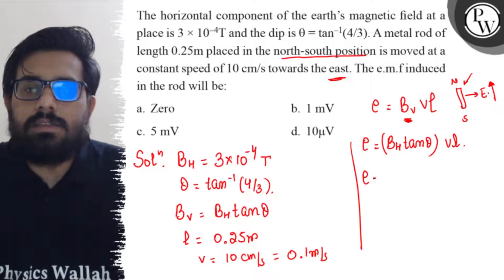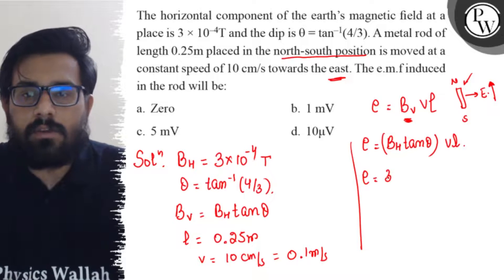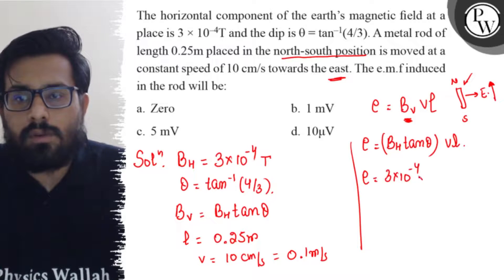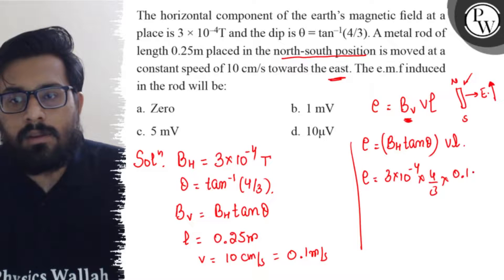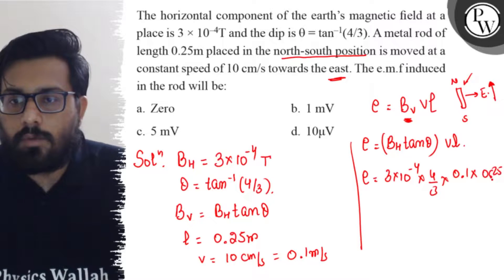So E equals the value of BH is 3 into 10 to the power minus 4, tan theta into 4 by 3, V is 0.1 and the length is 0.25.